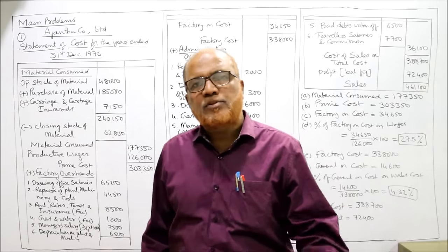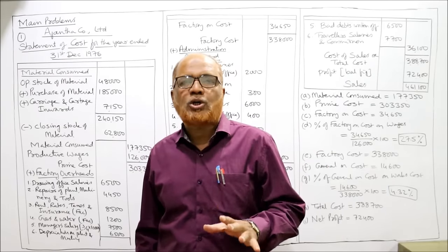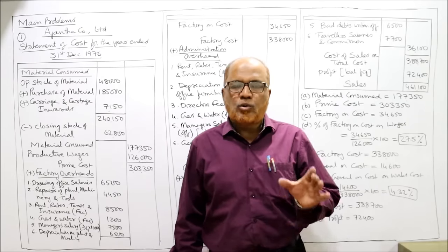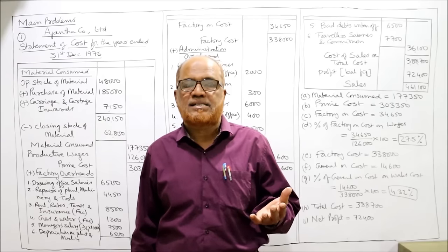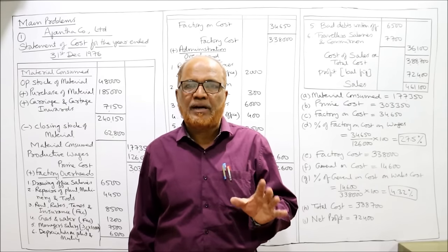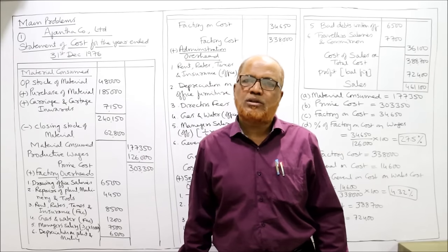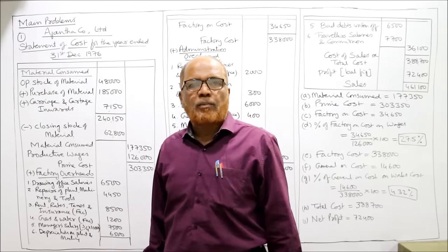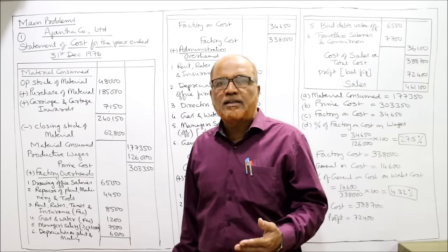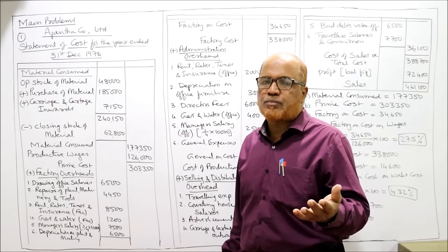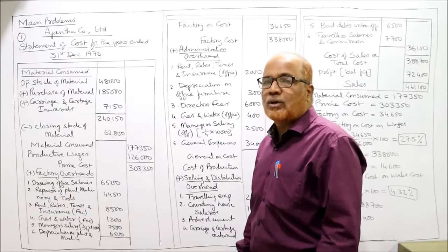Hello students, we'll continue the problems on unit and output costing. In the previous video we completed the short questions on unit and output costing — basic problems where we calculated the prime cost, works cost, percentages, and quotations. Now we are coming to the main problems. I expect you to have a hard copy of all the problems; I have provided the questions in the link, so go to the description, find the link, get a hard copy.